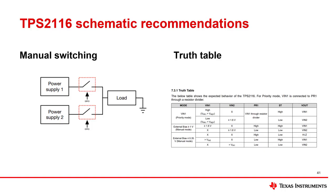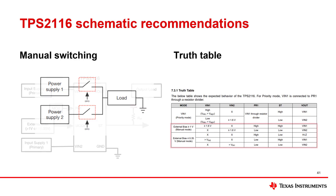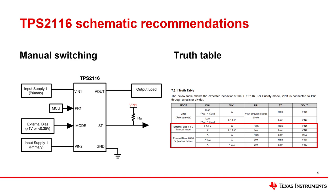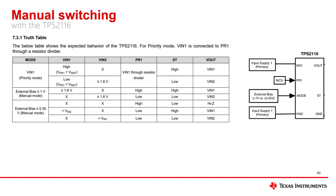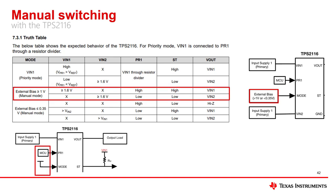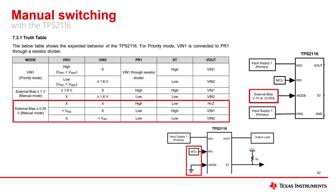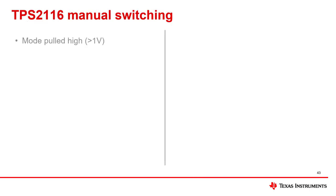If manual switching is required, a look at the TPS2116 truth table will lead to the following schematic, knowing that mode must be tied either to an external low or an external high bias. A high (greater than one volt) bias on the mode pin will tell the device to look at the PR1 pin to decide which input to output. If mode is tied low, the device will operate in an ORing configuration where the larger supply is selected.